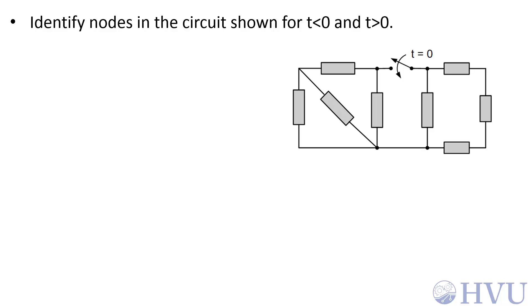I want to identify nodes in this circuit for times t<0 and t>0. This circuit has a switch in it. The switch is open for t<0 and closed for t>0.